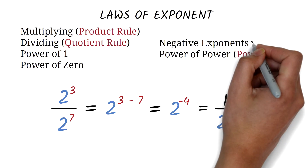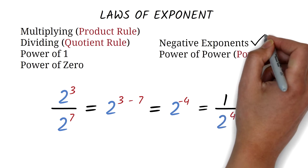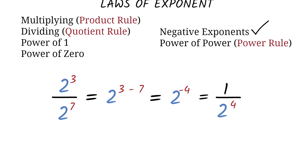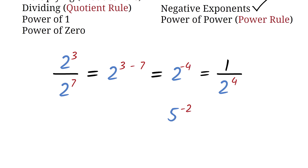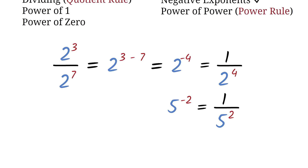Try this: simplify 5 exponent negative 2 and write it as a positive exponent. All we do is write 1 over 5 exponent positive 2 — we brought the 5 from the numerator to the denominator and changed the exponent from negative 2 to positive 2. Pretty straightforward.